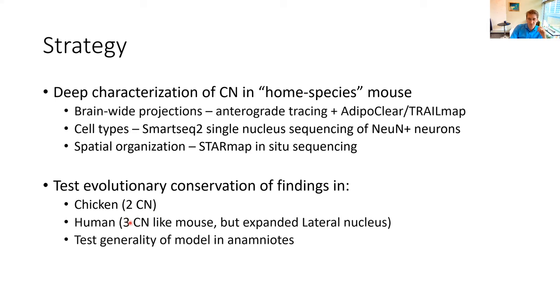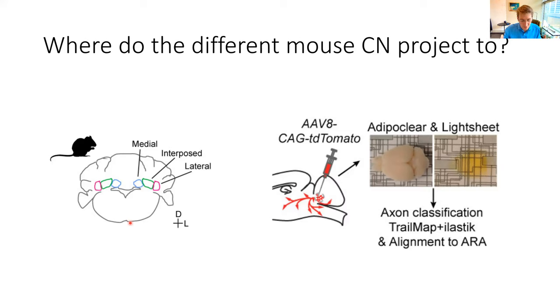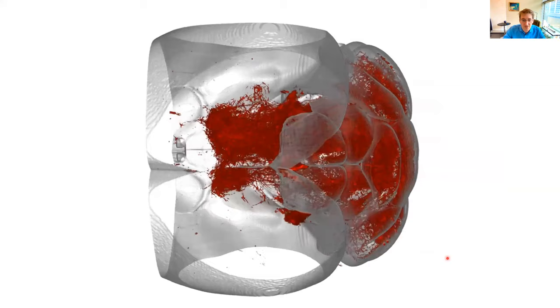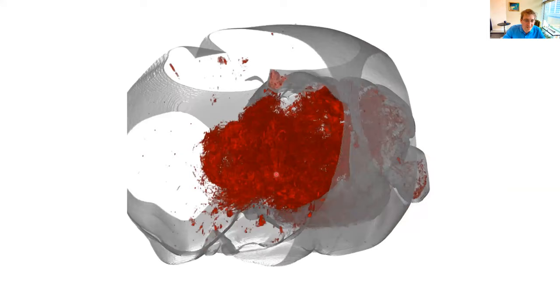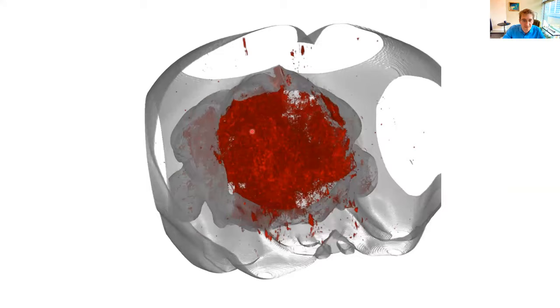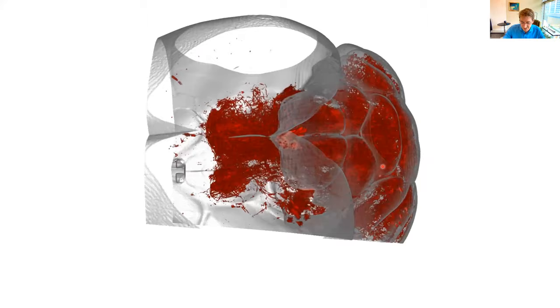First we wanted to ask where the different cerebellar nuclei in the mouse actually project. We took an AAV cre-tomato virus and injected it separately into the medial, interposed, or lateral nucleus of the mouse, cleared those brains, imaged them volumetrically, and detected all the axons. We get brain volumes where you can see in red all the recovered axons from a single medial nucleus injection. What you can see is that a lot of axons — basically anything posterior to the thalamus — is innervated by the cerebellar nuclei.